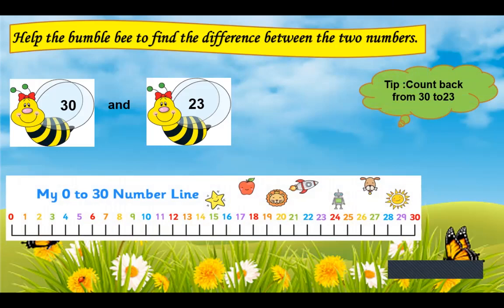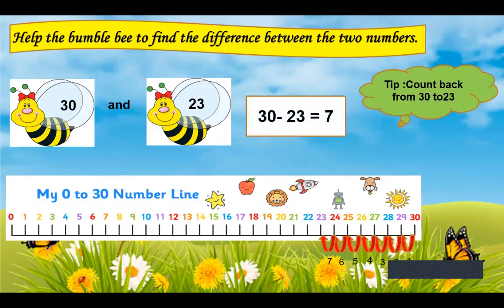So here the big number is 30. From 30 you are counting back. So 30 to 29: 1. 29 to 28: 2. 28 to 27: 3. 27 to 26: 4. 26 to 25: 5. 25 to 24: 6. 24 to 23: 7. So here we have counted 7 steps backward. So our answer is 30 minus 23 is 7.